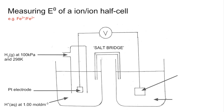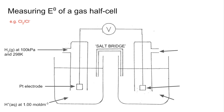To measure the standard electrode potential of an ion/ion half cell, the standard hydrogen electrode is on the left, and on the right you have one mole per decimetre cubed solutions each of Fe³⁺ and Fe²⁺ with a platinum electrode. For a gas half cell, such as chlorine/chloride, you connect the standard hydrogen electrode to a setup where chlorine gas is fed in at 100 kPa and 298 K, with chloride ions at one mole per decimetre cubed — again requiring a platinum electrode.